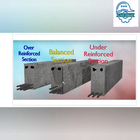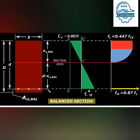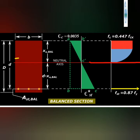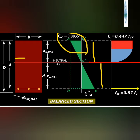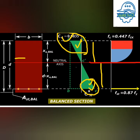You can see here a schematic drawing and the actual picture of the balanced section. This is the balanced section and this is the neutral axis. In this type of section, the stress and strain in tension and compression both reach their maximum values at the same time. That's why the structure may fail in compression or tension. The neutral axis in this type of section is called the critical neutral axis, denoted by nc.